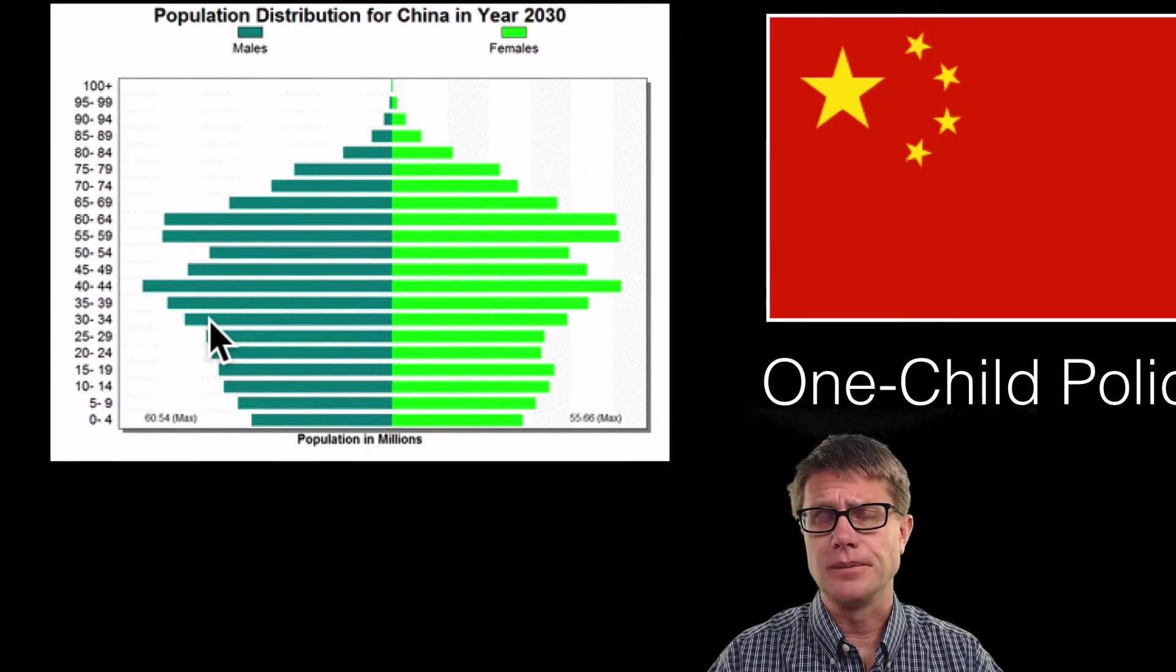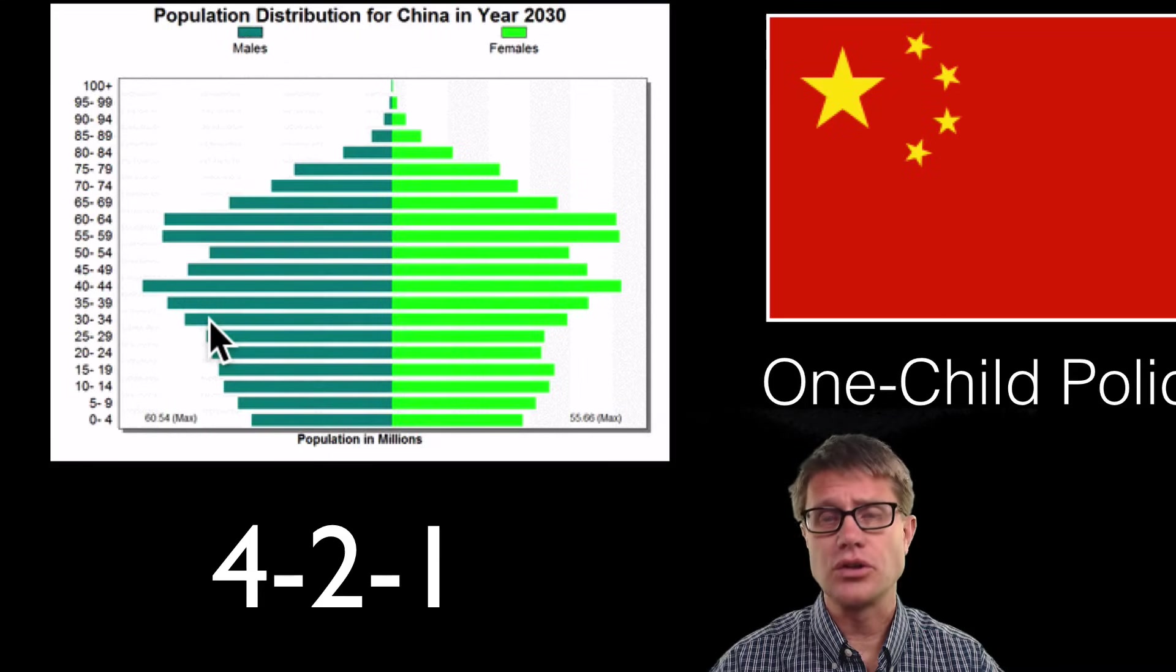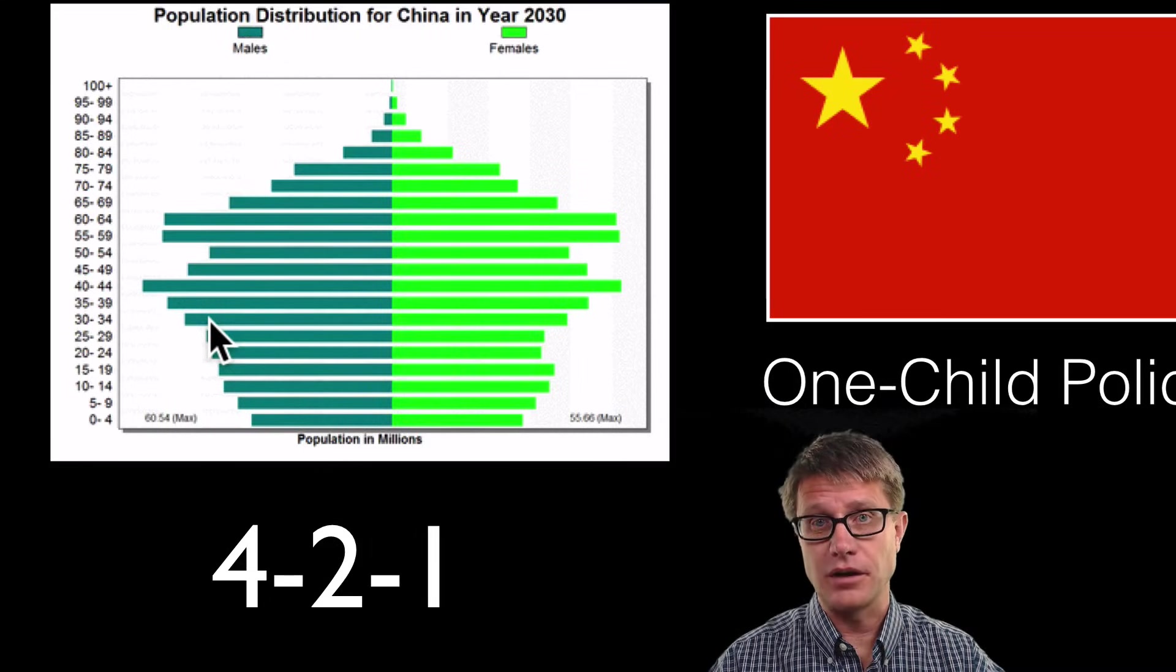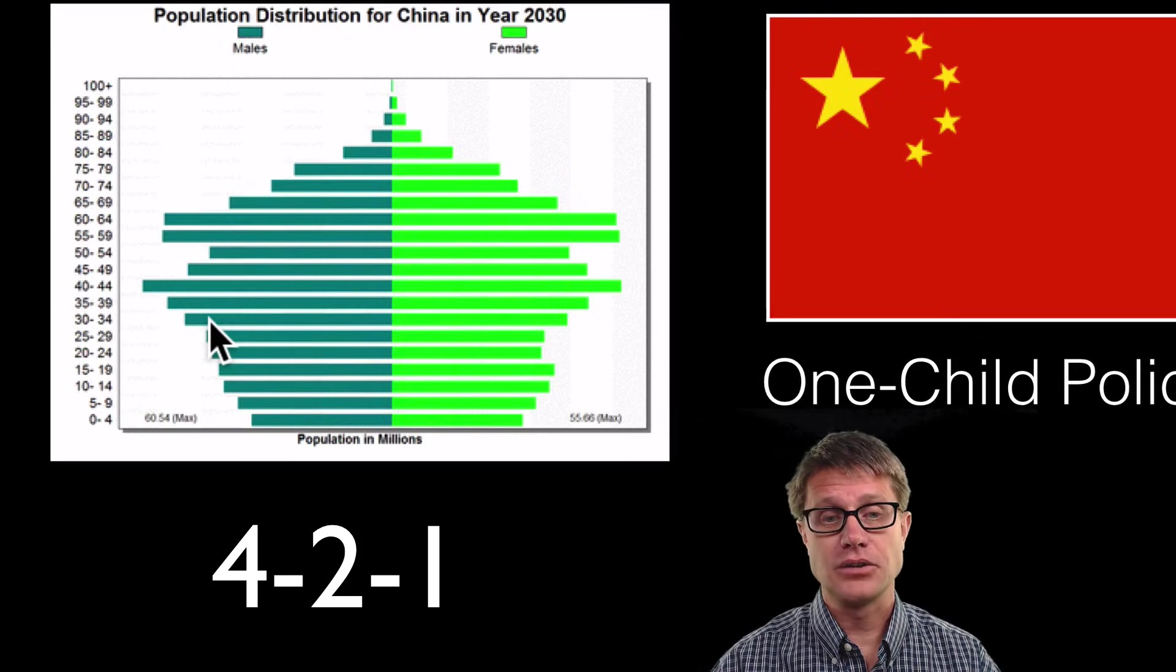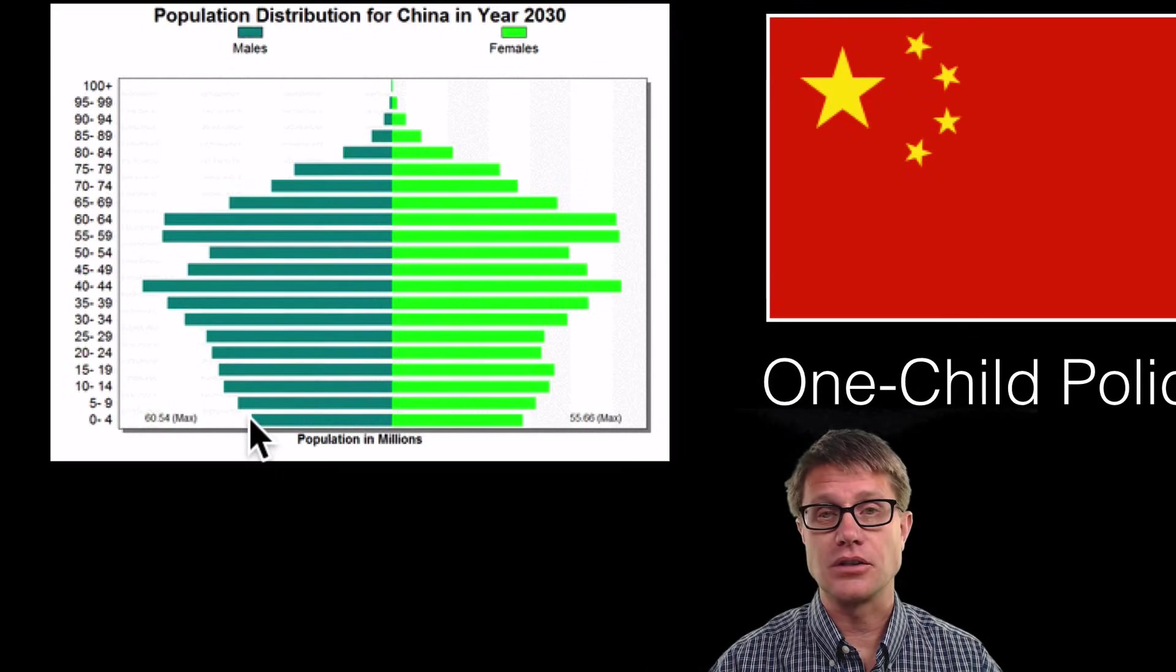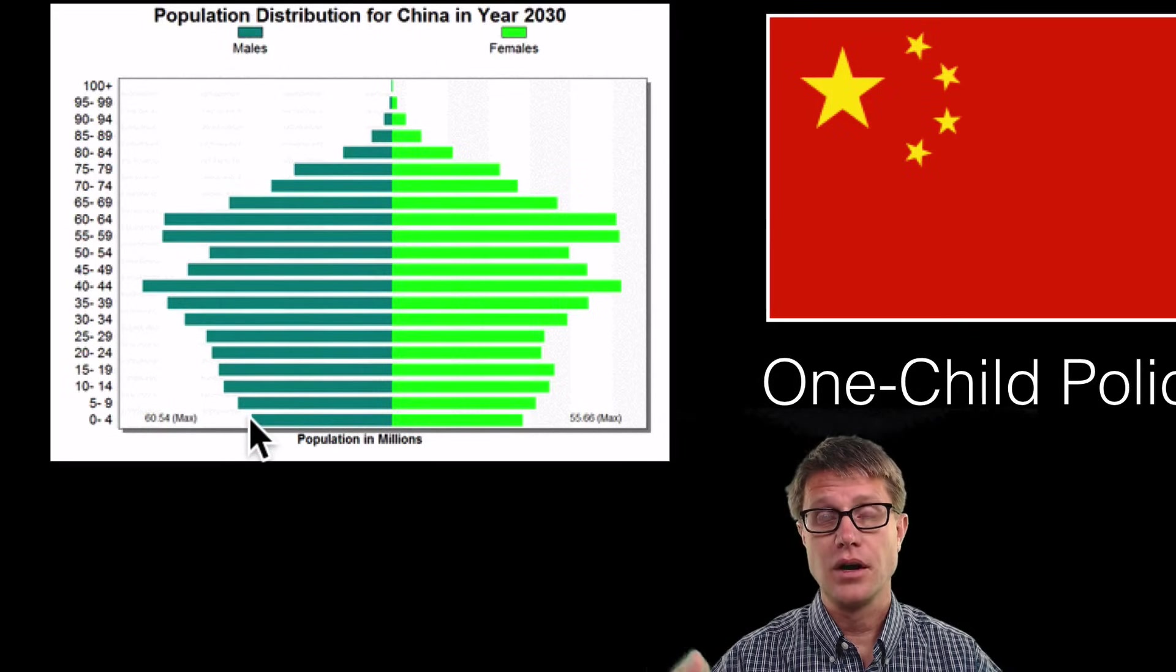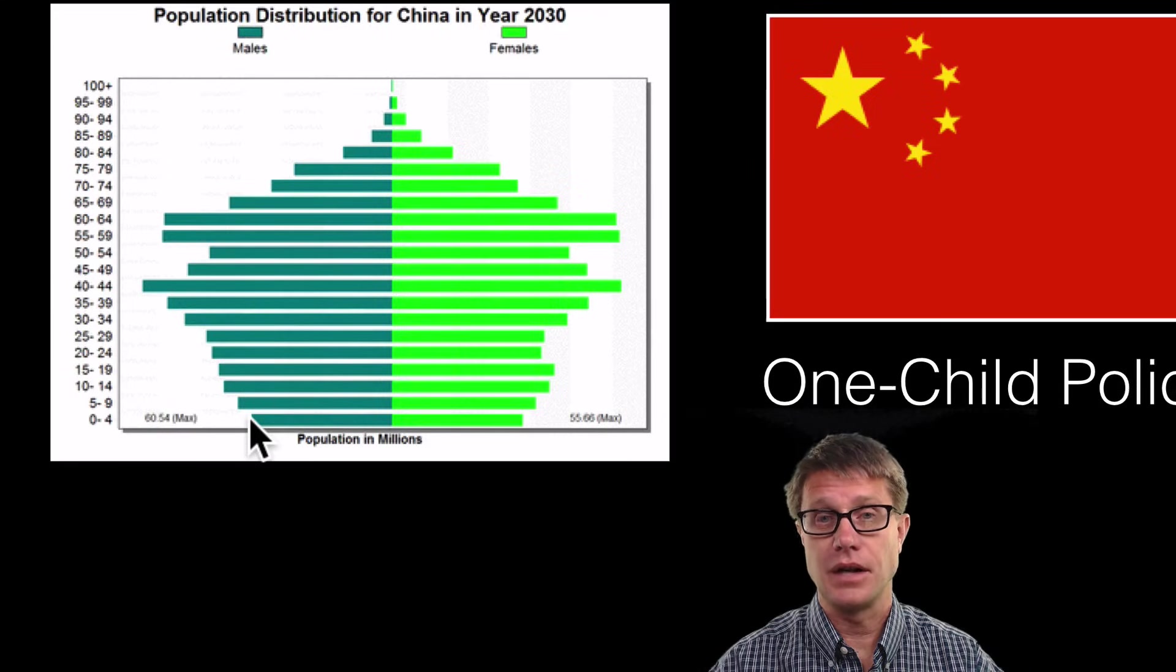Now why is this a problem? Well in China they call it the 4-2-1 problem. You have got four grandparents, two parents, and one child. And that one child has to support all of that. And so as it gets narrow in the age structure it is going to be hard for them to support all those people who are retiring as an economy.